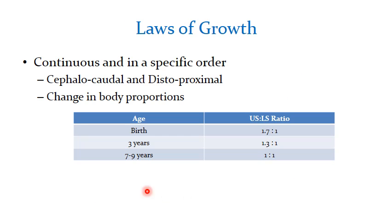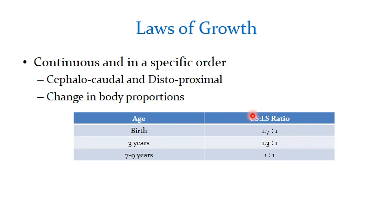Now let's discuss a few laws of growth. Growth is continuous and in a specific order, that order being cephalocaudal and distoproximal — meaning that the head develops and grows first followed by the neck, and the distal parts grow first before the proximal parts. This sequence means that body proportion changes as the child grows. The upper segment to lower segment ratio is about 1.7:1 at birth, which becomes 1:1 at around 7 to 9 years of age.